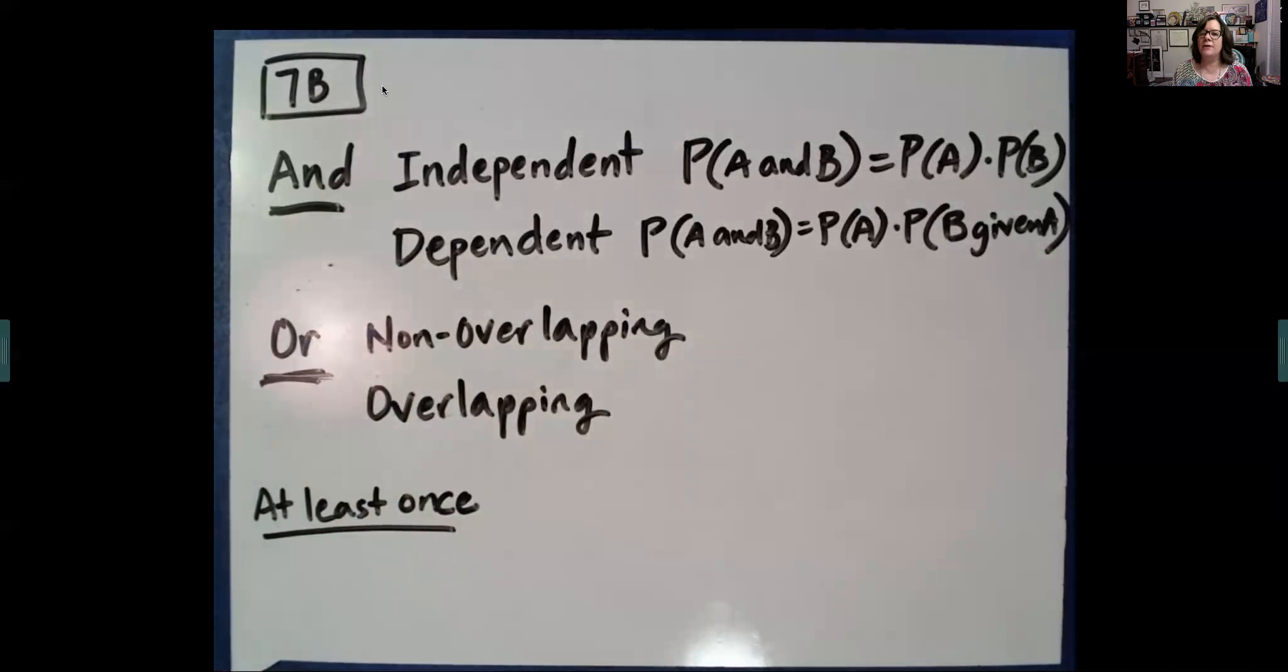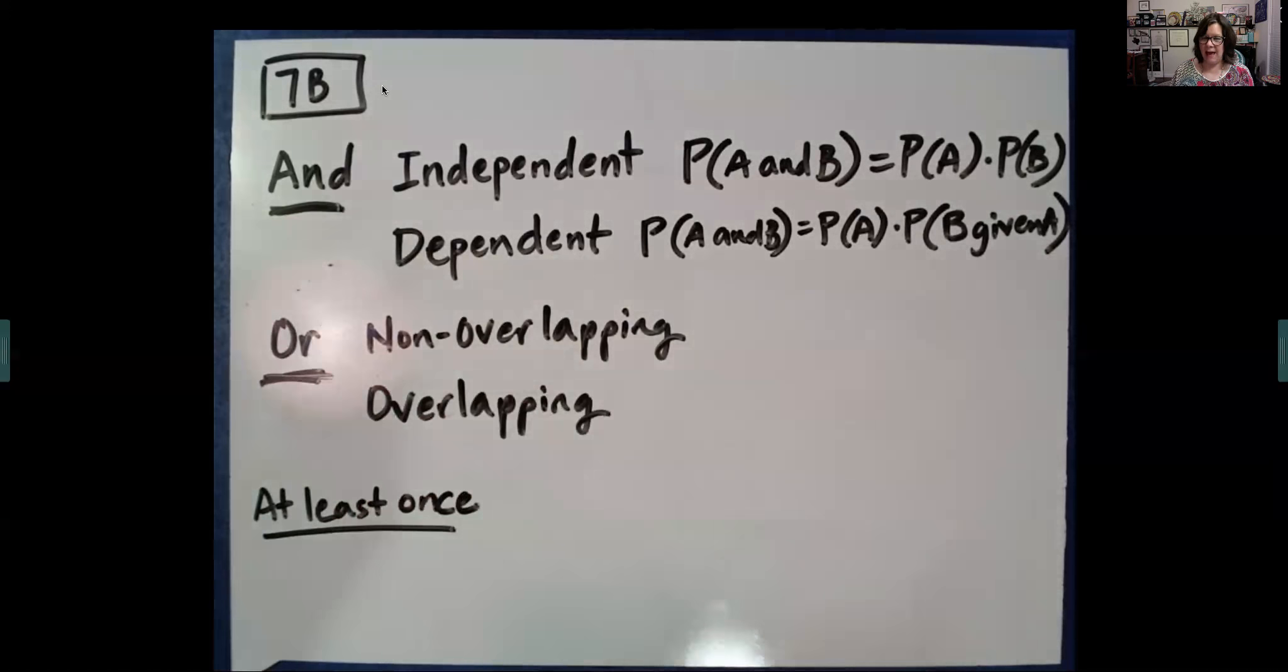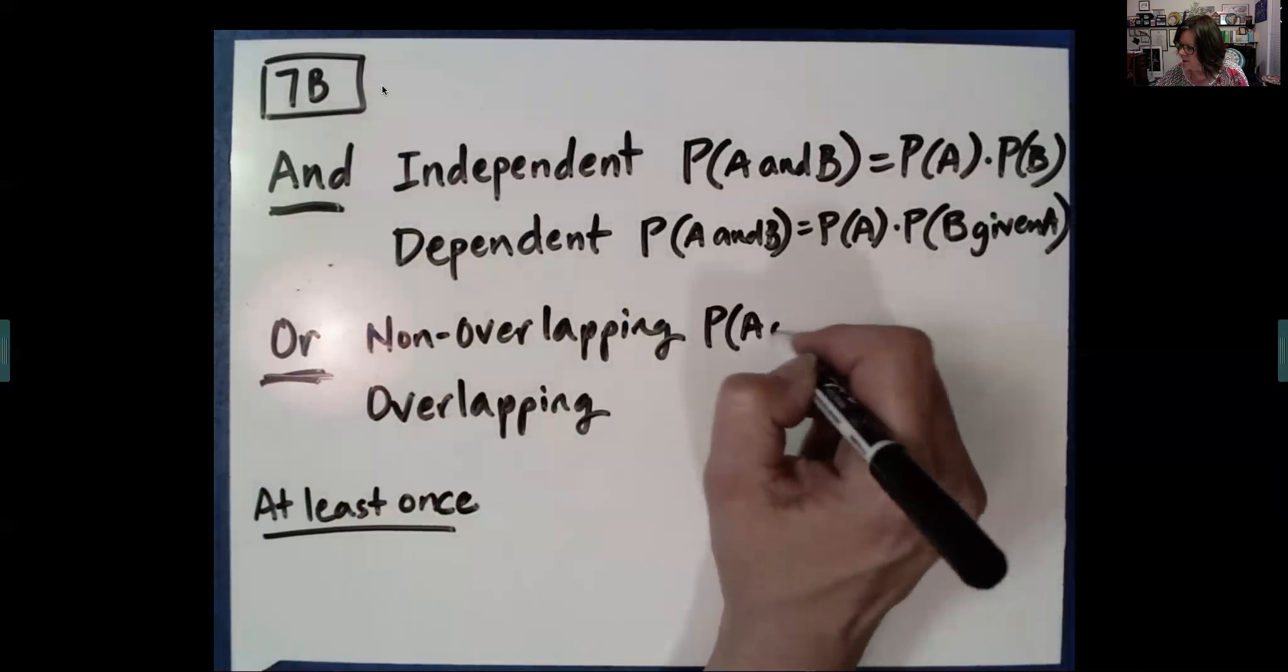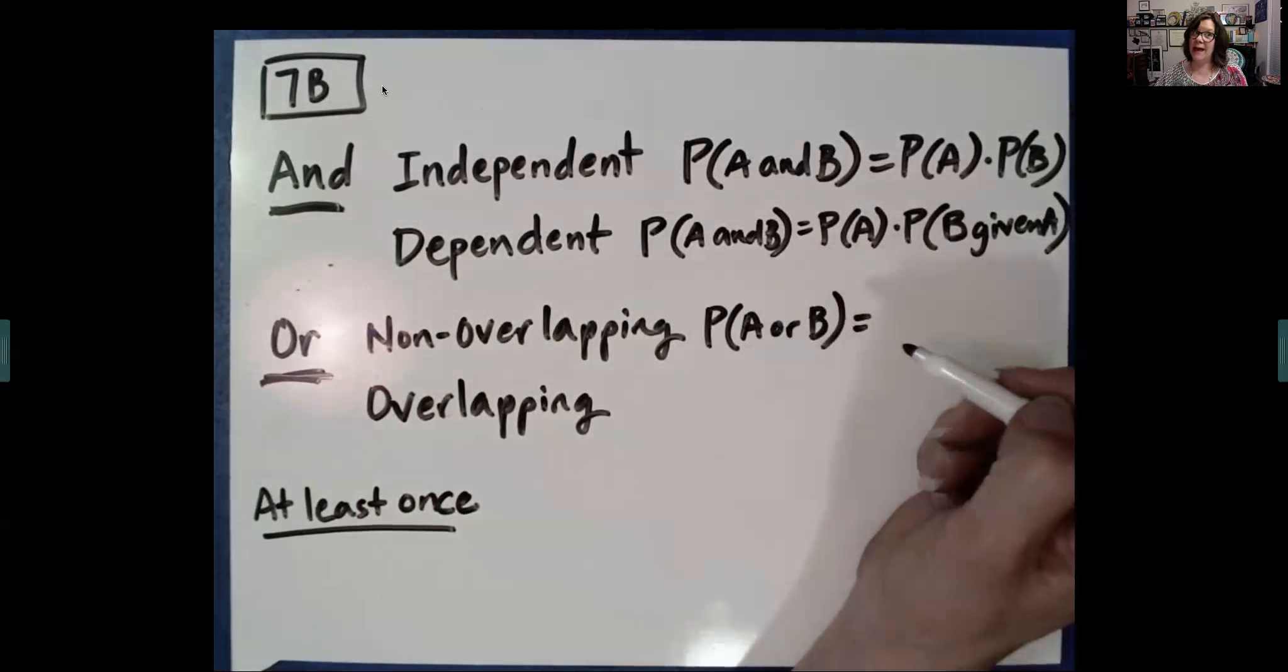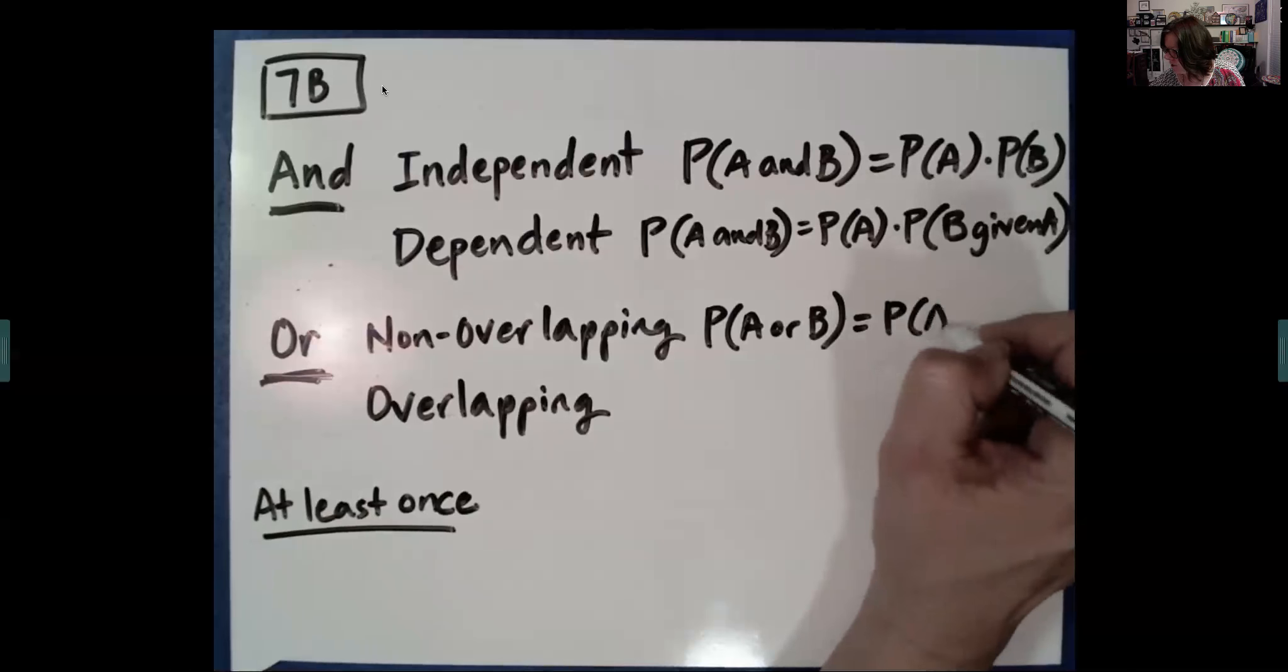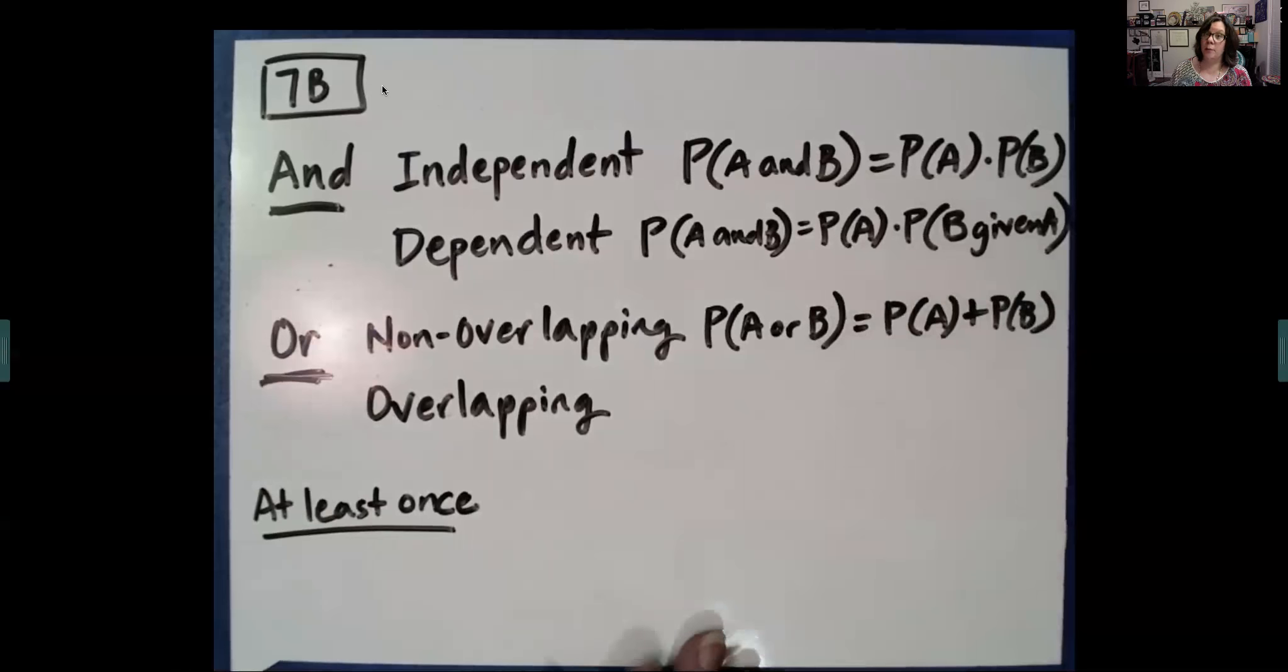Now, for or, they're going to yield a bigger probability than either that we start with. So, if they're not overlapping, if it can't be A and B, we're hunting for the probability of A or B. This is where it can't be A and B. Then we take one probability and add it to the other. It gives us a bigger number.